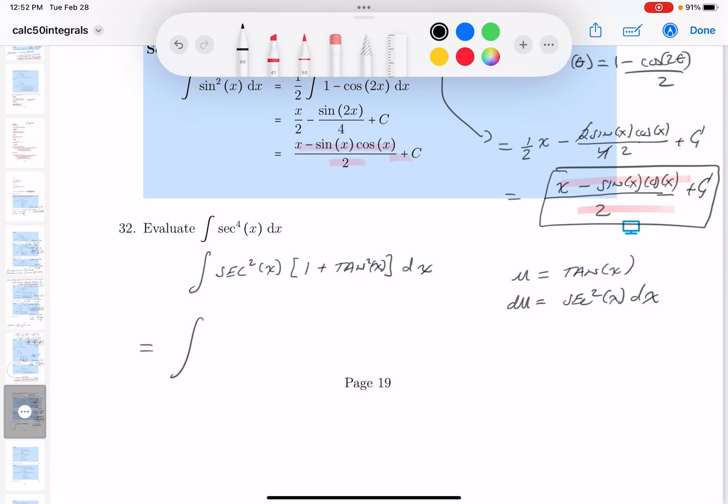Well, let me write that down. It's going to be 1 plus u squared du, which is a substantially easier integration to do.